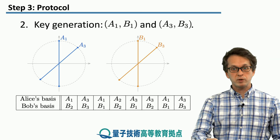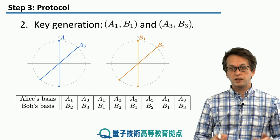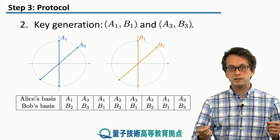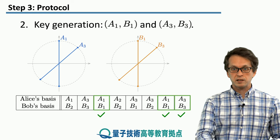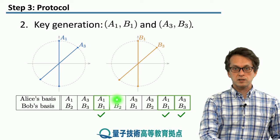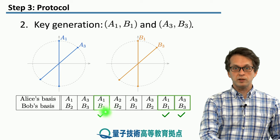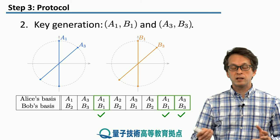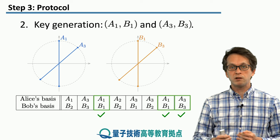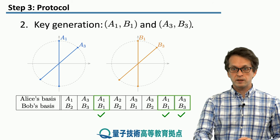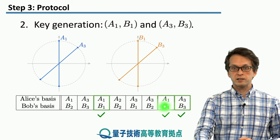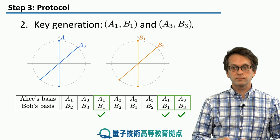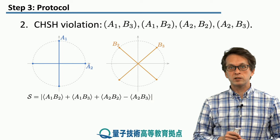Bob's choices might be B1, B2, B3, B1, and so on. They exchange information about these bases and look at the places where their measurement basis choices coincide. For instance, when Alice measures A1 and Bob measures B1, both measured in the Z basis — they get anti-correlated outcomes which they can use to generate a correlated classical key. Similarly for cases where both measure in the rotated A3, B3 bases. That takes care of generating the key.